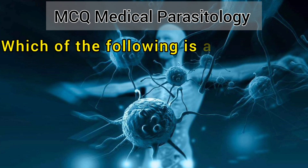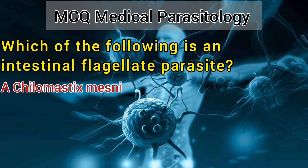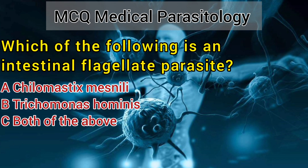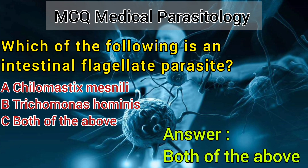Number 3. Which of the following is an intestinal flagellate parasite? A. Chilomastix mesnili. B. Trichomonas hominis. C. Both of the above. Answer: Both of the above.